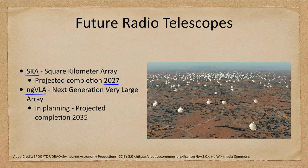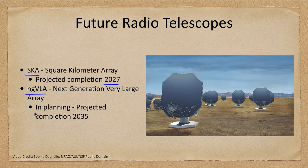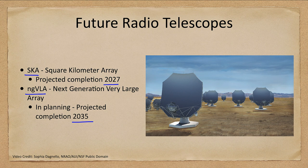Also being worked on is the NG VLA — the Next Generation Very Large Array. It is in very early planning stages, currently projected to be completed in 2035. It will be an updated version of the VLA with much more updated technology and better telescopes to give us a better understanding of radio-emitting objects in the universe.